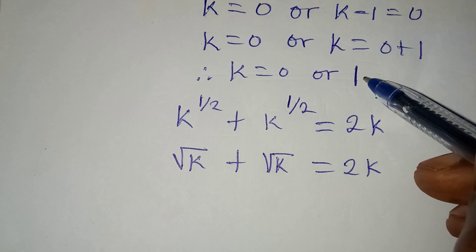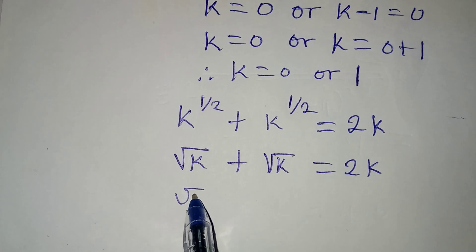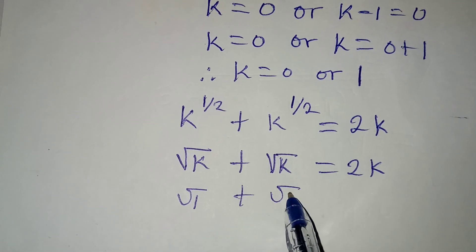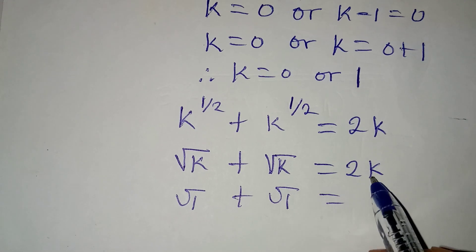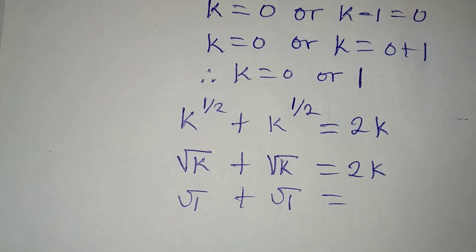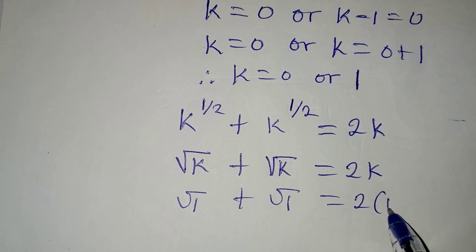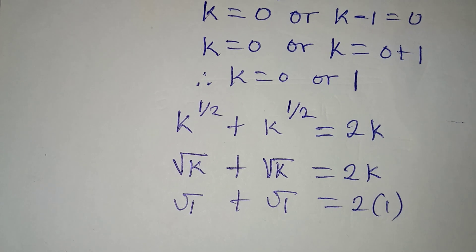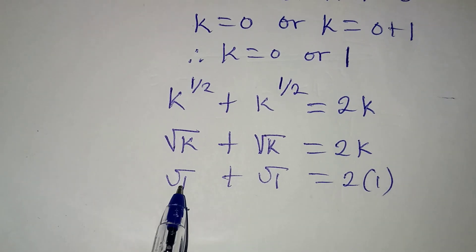But if we put one, we're going to have square root of one plus square root of one and then k is still one, so I'll put two times one. And remember that one is a perfect square, so square root of one is one.